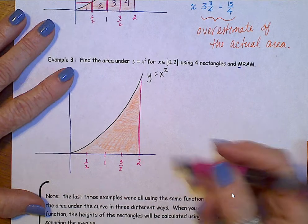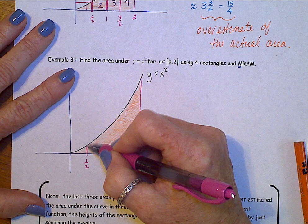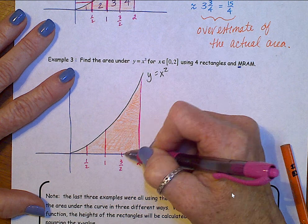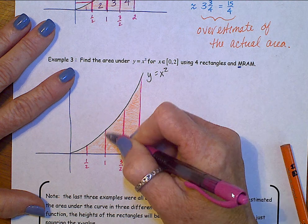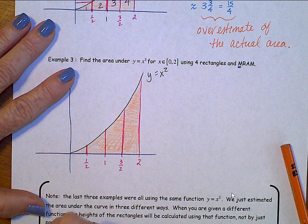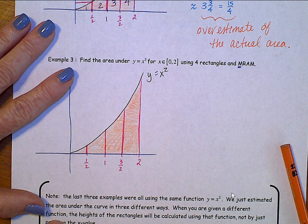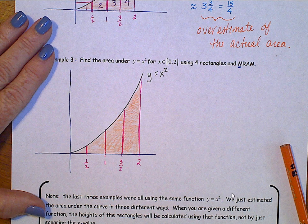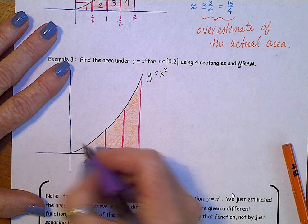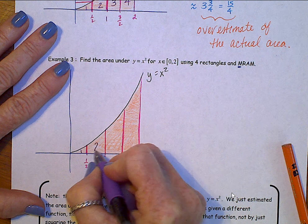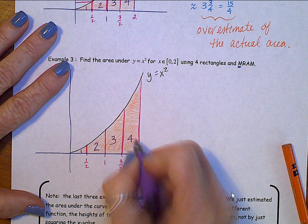Just like LRAM and RRAM, we're going to put these dividing lines for these sections going up, vertical. Alright, now, let's number these sections. First, second, third, fourth.